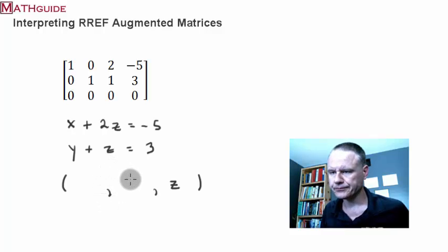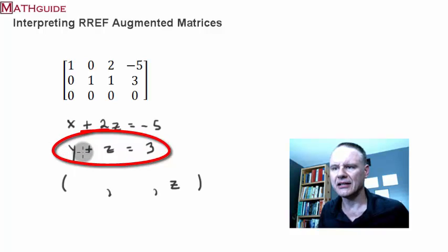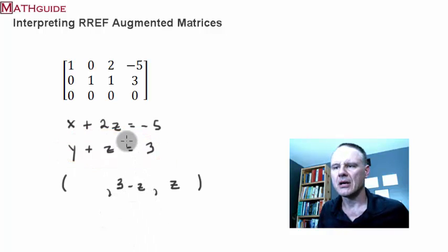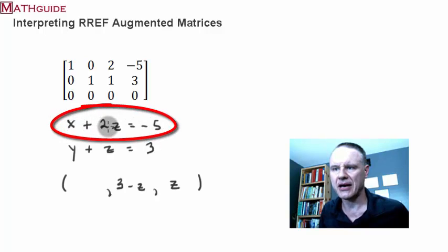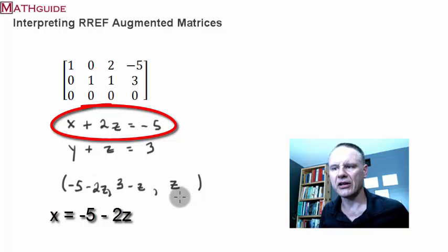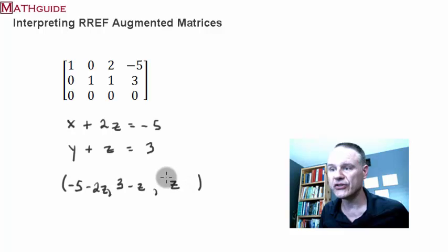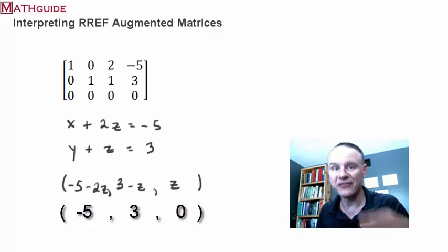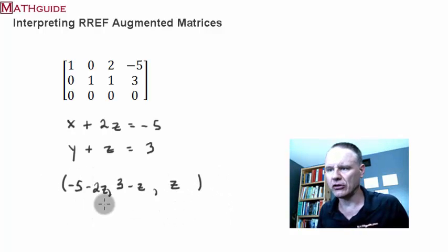Now, doing some algebra: if I solve the second equation for y, I move z over to the other side by subtracting z from both sides, and I get y equals three minus z. Then for the first equation, I solve for x by subtracting 2z from both sides, getting x equals negative five minus 2z. There are the infinite number of solutions — z could take on any value. For example, if z was zero, then y equals three and x equals negative five, so (-5, 3, 0) is one of the infinite number of solutions. You can choose different values for z.